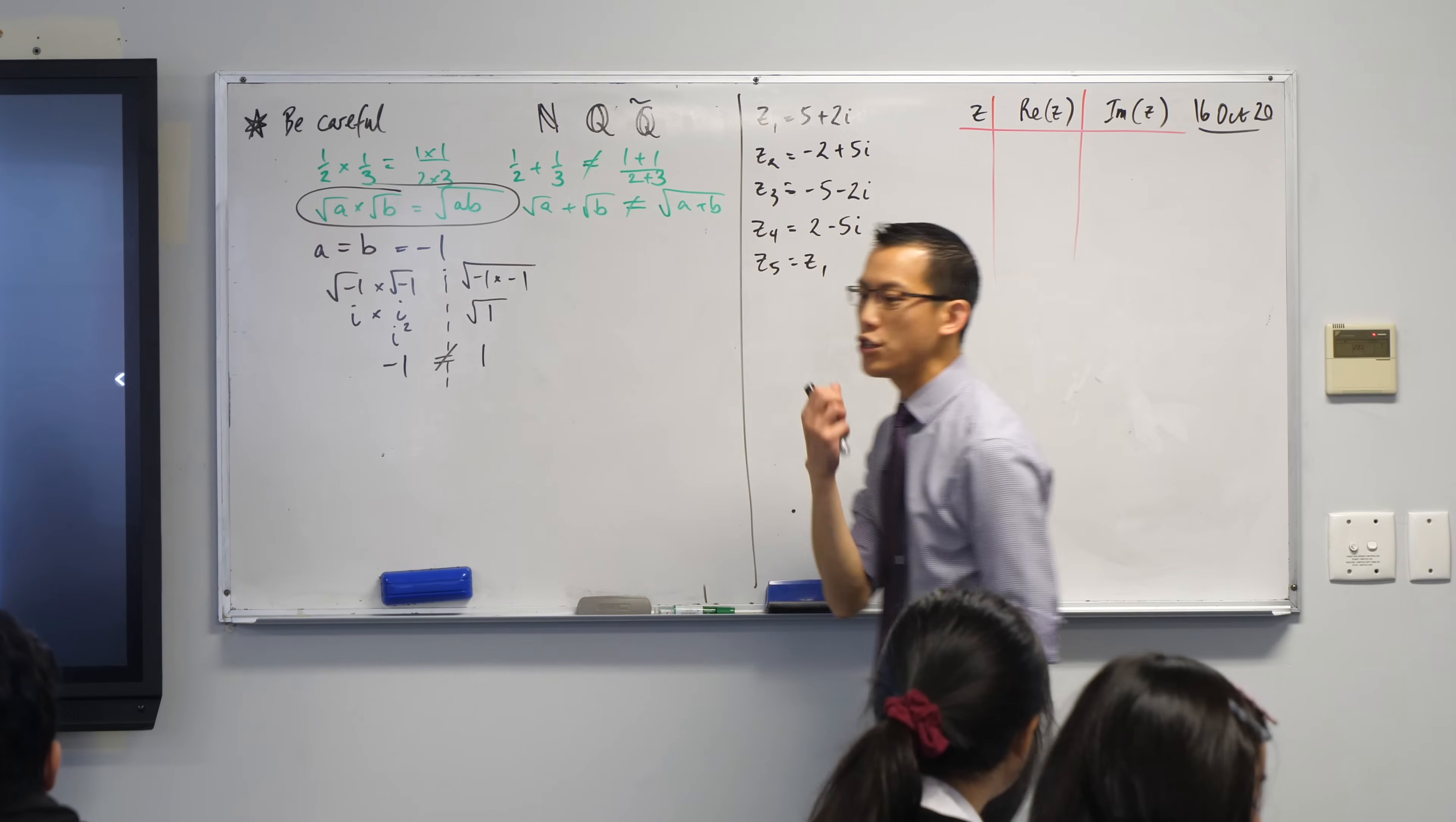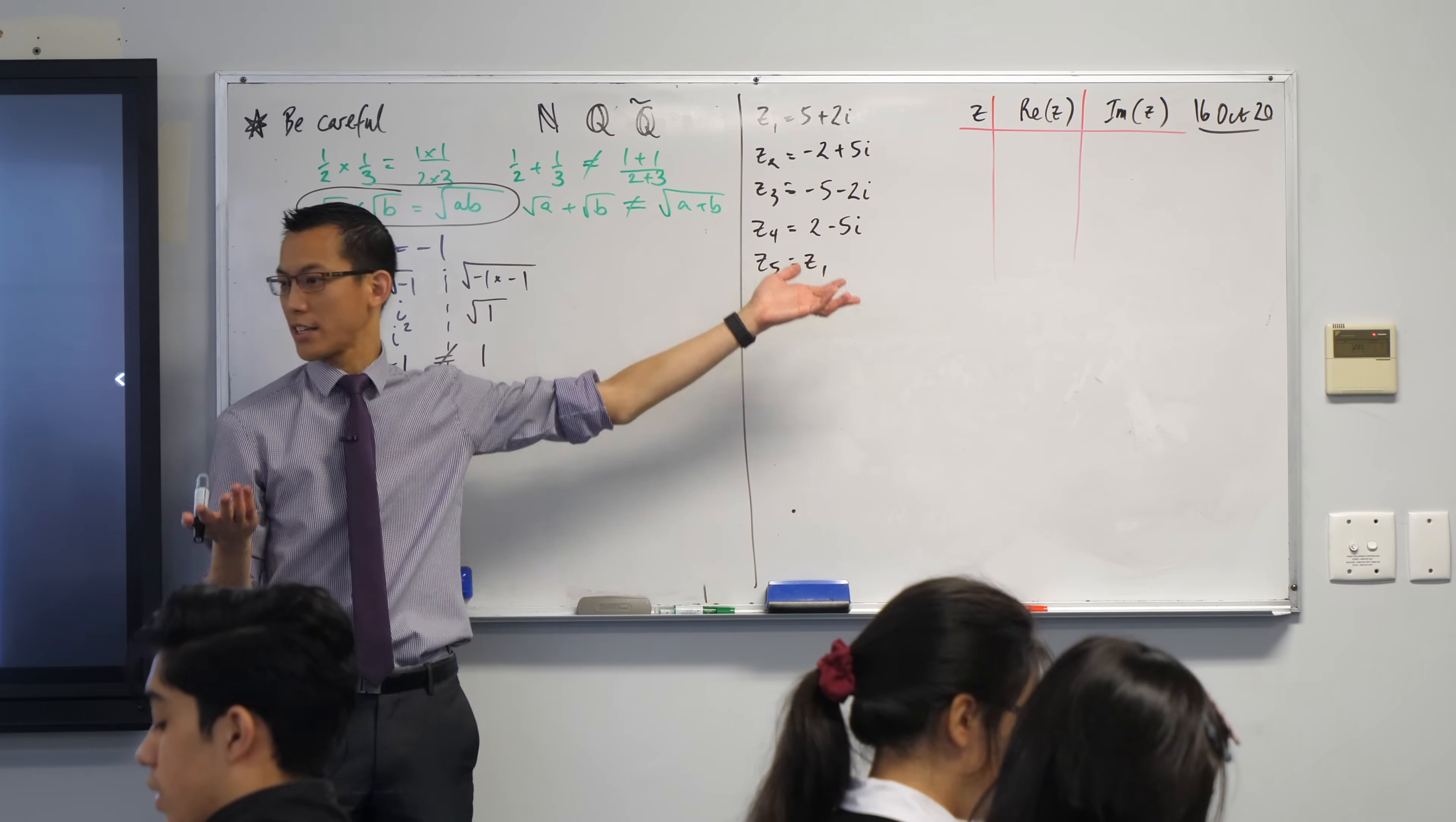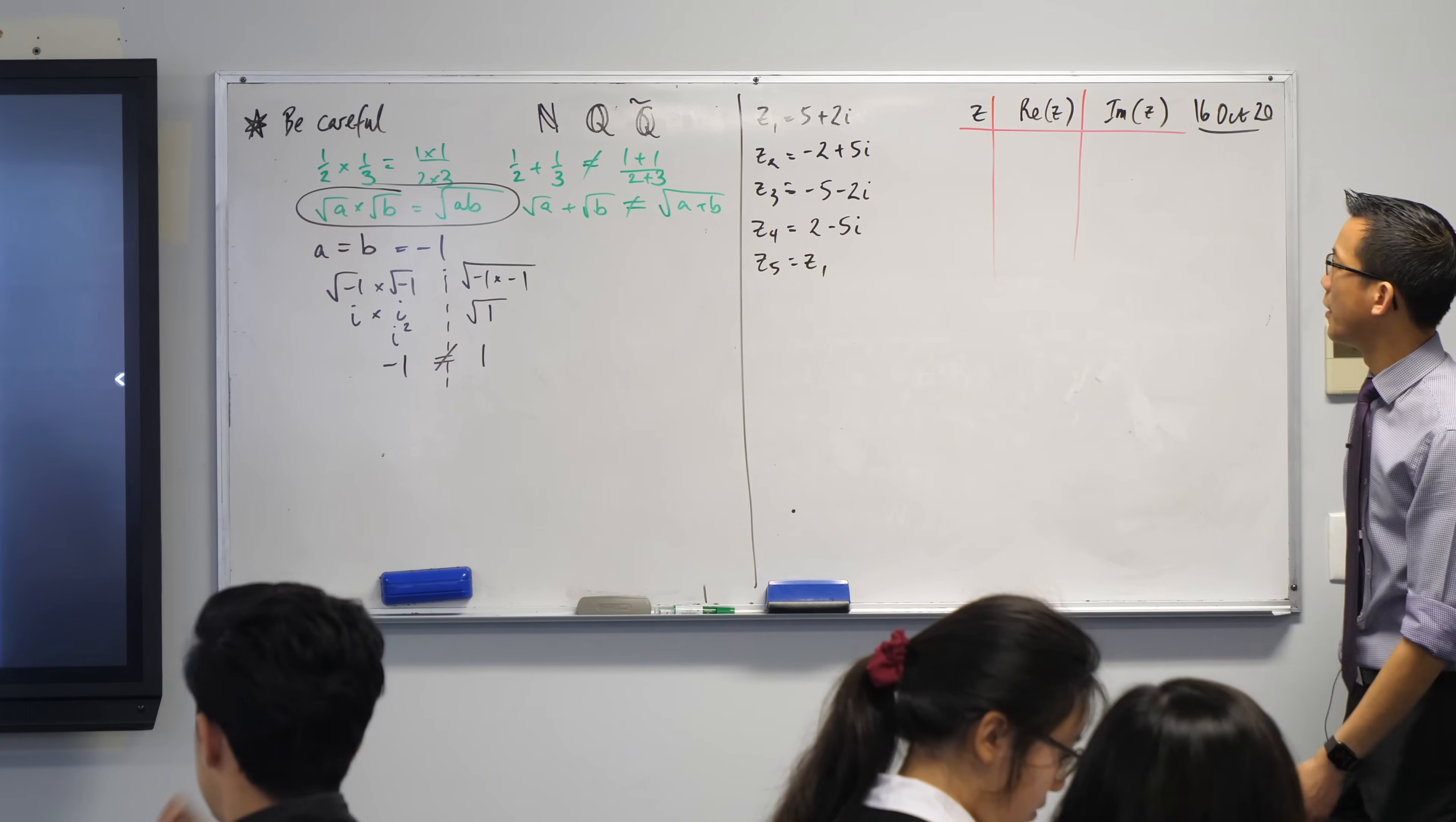Here's the second one. Turn back to where you did your starter questions this morning. The very first thing, I introduced these four seemingly random complex numbers to you, and I named them as well. I called them Z1, Z2, Z3, Z4, and then Z5, which happened to be the same as Z1.